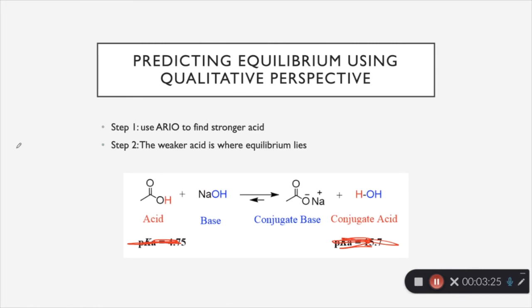So remember that when we use ARIO, we're looking at the conjugate bases of the acids. So here we have acid, base, conjugate base, and then the conjugate acid in this case doesn't really matter. So we have acetic acid. The conjugate base is going to be this right here. And then we have this negative charge on an oxygen, which is A for ARIO. And then we need to look at the resonance as well. And it is resonance stabilized.